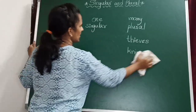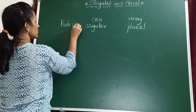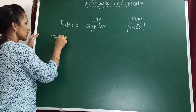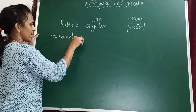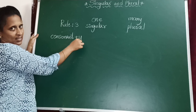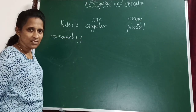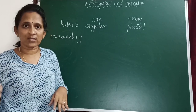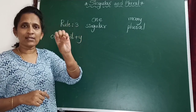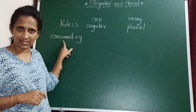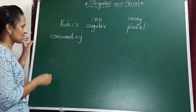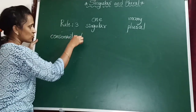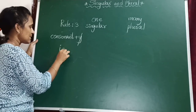Rule number 3. If the noun is ended with a consonant plus Y. What is a consonant, children? Do you remember? In the alphabet, we divide letters into two types: vowels and consonants. We have five vowels: A, E, I, O, U. Other than these five vowels, the rest of the letters are called consonants. So if the noun is ended with a consonant and Y, we have to change it into the plural form by dropping that Y and adding IES.